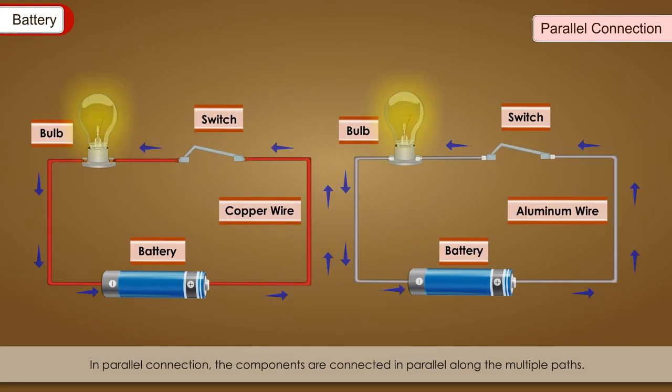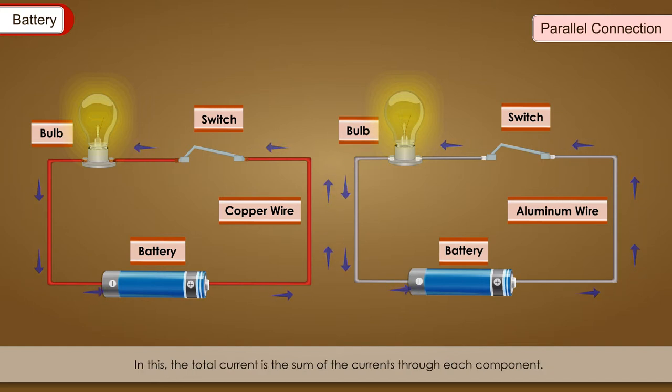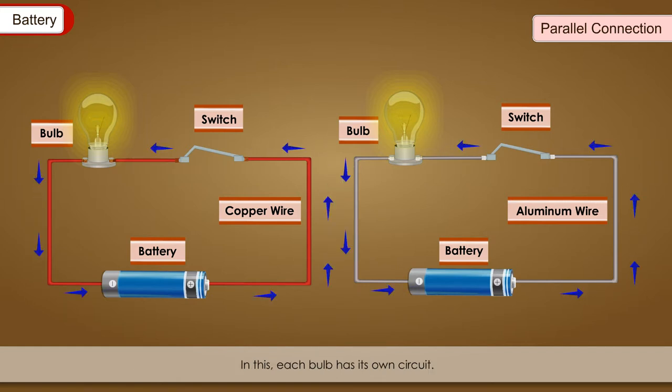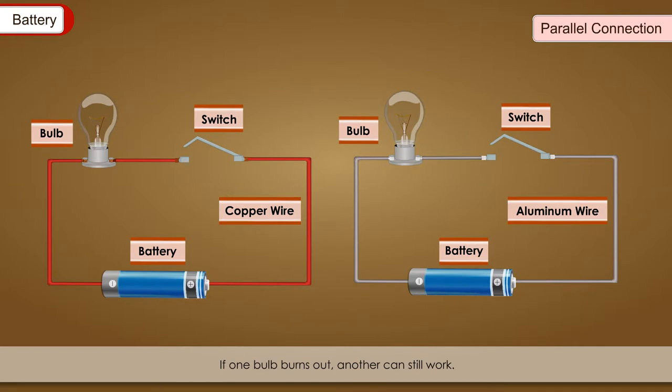Parallel connection: In parallel connection, the components are connected in parallel along the multiple paths. In this, the total current is the sum of the currents through each component. In this, each bulb has its own circuit. If one bulb burns out, another can still work.